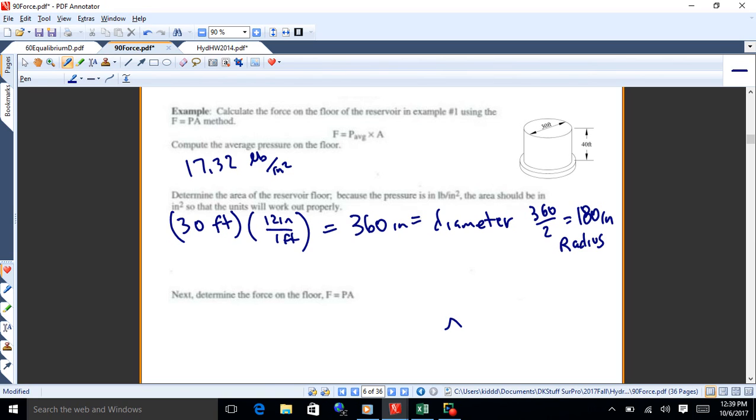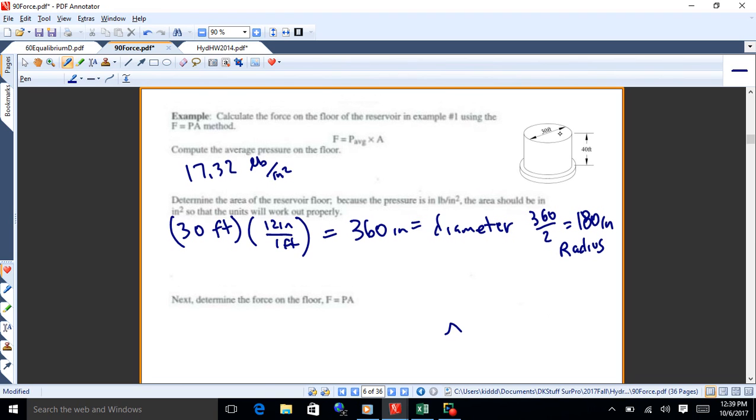So we've got a 180 inch radius for that tank. I want to be in inches so that I match the psi, the pounds per square inch. So the area of the tank then will be pi times 180 inches squared. So it's going to be an awful lot of square inches. It's 101,788 inches squared.